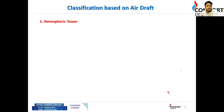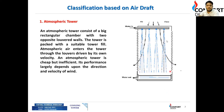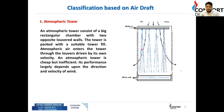Classification based on air draft: the first type is the atmospheric cooling tower. These are erected at the site and typically found in oil and gas industries, refineries, and manufacturing plants. An atmospheric tower consists of a large rectangular chamber with two opposite louvers. Atmospheric air enters through the louvers driven by its own velocity. It is cheap but inefficient, and its performance largely depends on wind direction.